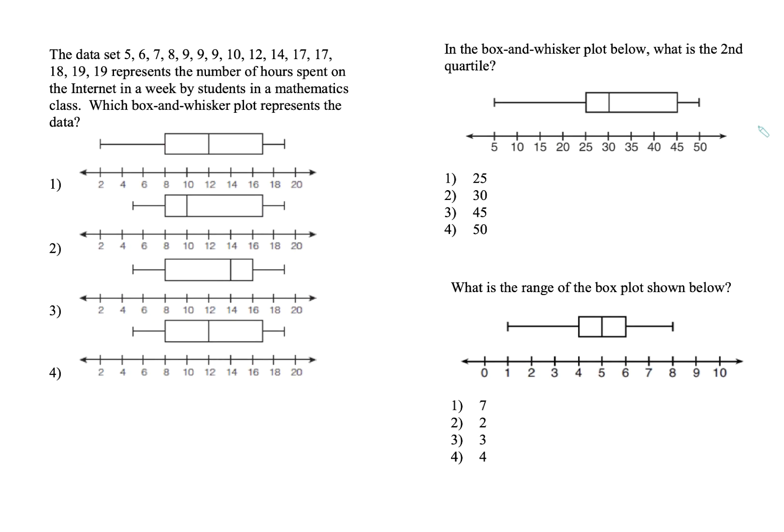On the TASK test, we don't actually have to draw the box and whisker plot — we'll have to identify it. They'll give you the data and ask you from four choices which one represents the correct box and whisker plot. They may also ask you to interpret it, such as finding Q1, Q2 — the median — Q3, minimum value, maximum value, and the range. Range is when you subtract the largest value from the smallest value. Let's take a look at some questions you may see on your TASK test.